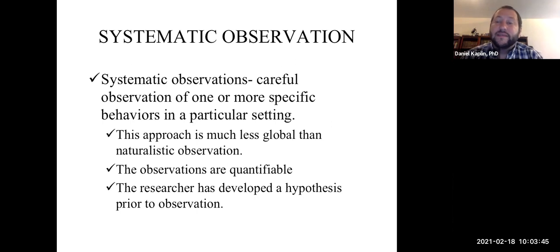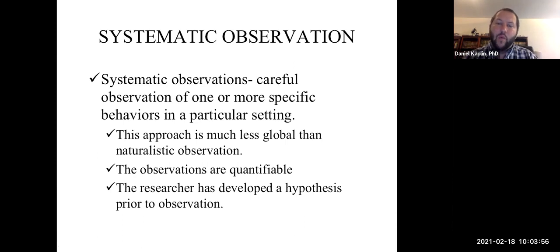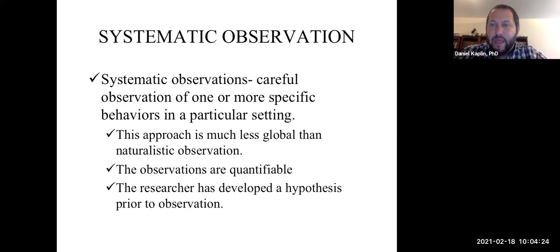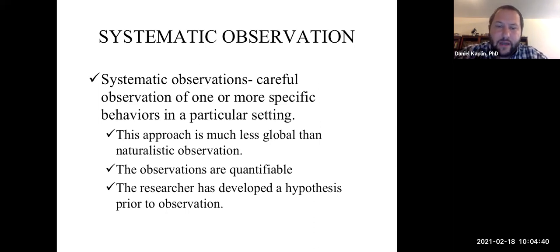Let's shift gears to a more systematic observation. A systematic observation is a careful observation of one or more behaviors in a particular setting, but it's far less global — you're no longer observing every single behavior. You have a specific focus of behavior, as we talked about with ethograms. Your observations can be quantified — you're no longer writing in description, but scoring the number of times a given behavior occurred. Oftentimes you're relying on a priori hypotheses and existing general theories. Systematic observation is more of a deductive reasoning approach.